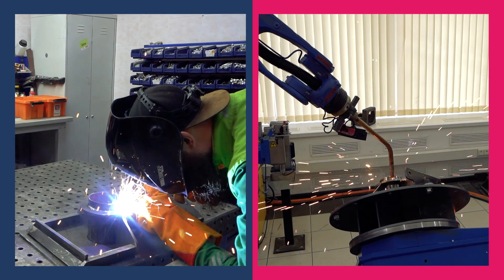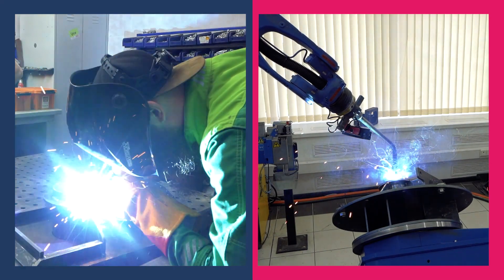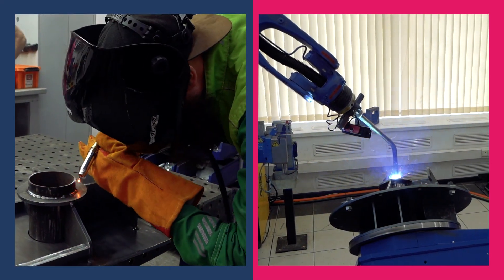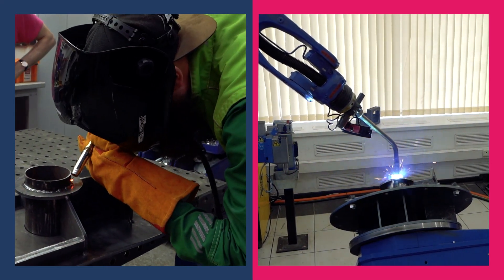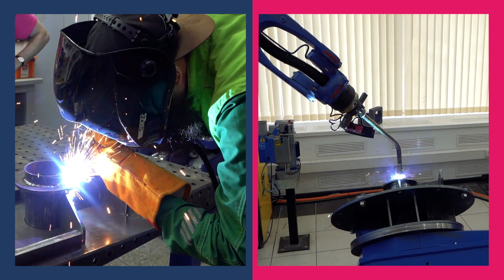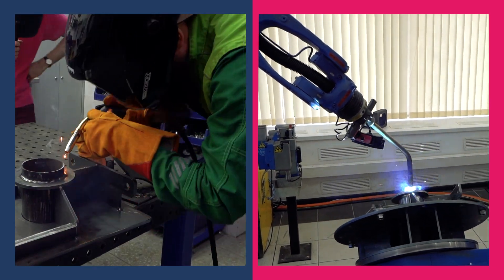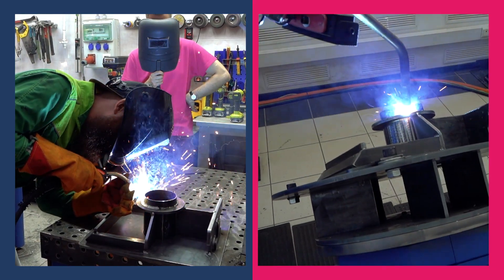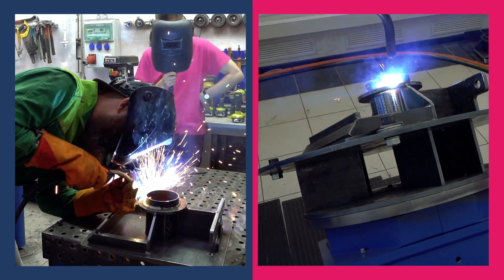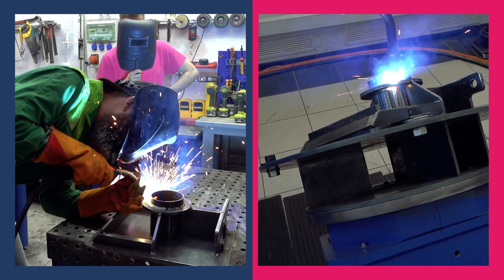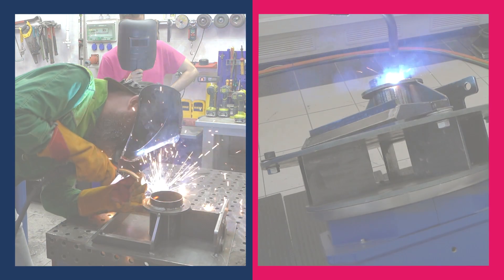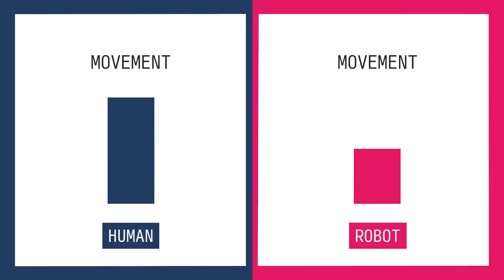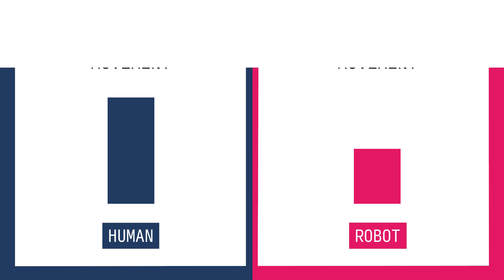Movement: this is where a robot can beat a human. This is especially true for large parts and long seams. It's inconvenient for a human to weld them — you constantly have to move, drag the welding machine along, and make stops during welding. In general, it's just plain inconvenient. A robot can win hands down. But this only applies to large parts.